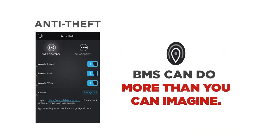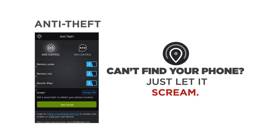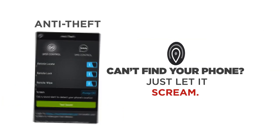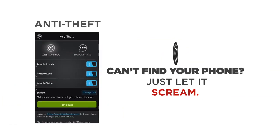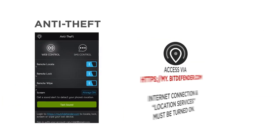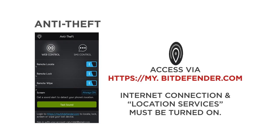Locate, lock, or even wipe your phone memory remotely with the anti-theft feature. If you can't find your phone and have forgotten where you placed it, just let it scream. You can access these functions online at the Bitdefender website.